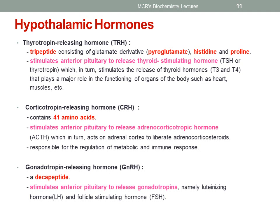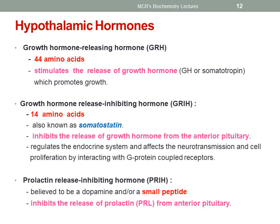The gonadotrophin releasing hormone, which is a decapeptide, stimulates the anterior pituitary to release gonadotrophins, namely luteinizing hormone and follicle stimulating hormone, which act on the gonads. The growth hormone releasing hormone consists of 44 amino acids and stimulates the release of growth hormone, also called somatotrophin, which promotes growth. The growth hormone release inhibitory hormone, also known as somatostatin, consists of 14 amino acids and inhibits the release of growth hormone from the anterior pituitary.